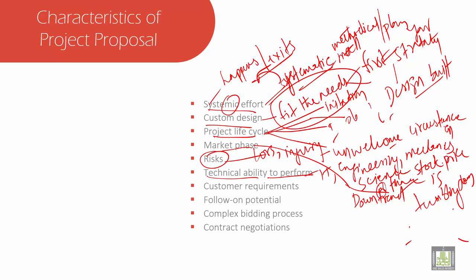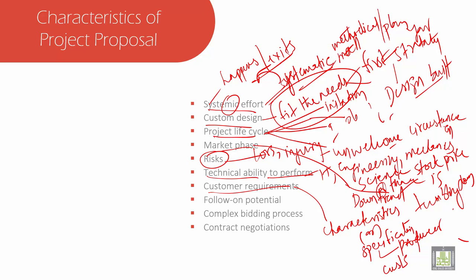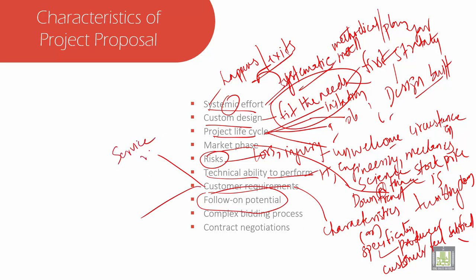Then we have customer requirements. Customer requirements are the characteristics or specifications that should be present in a product when the customer feels satisfied. There are two main factors: service requirements and output requirements. Service requirements refer to the intangible aspects of purchasing a product, like on-time delivery, service with a smile, and easy payment methods. These are all customer needs.